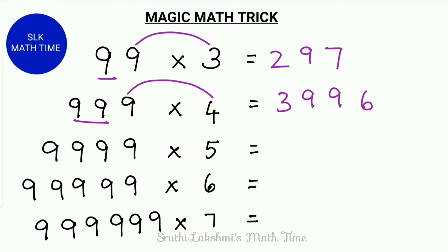Next, let's try 9999 into 5. So we do 9 into 5 which is 45. We write 45 with a little gap in between. Next, how many 9's are there before this 9? There is 3 9's. So we write 3 9's over here.